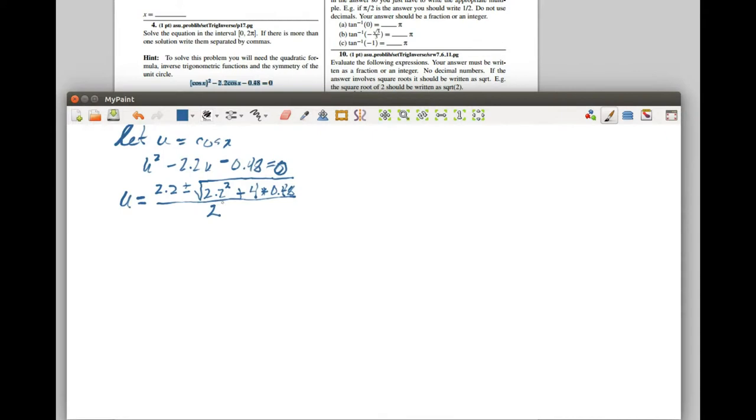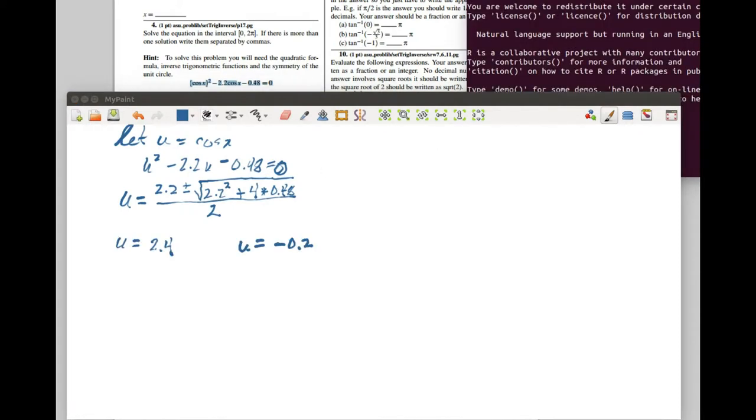If you need help with the quadratic equation, go to Khan Academy and look up quadratic equation. This quadratic equation gives us two answers, one when we're using the plus and another when we're using the minus. When it's plus, we get 2.4. When it's minus, we get u is equal to negative 0.2.